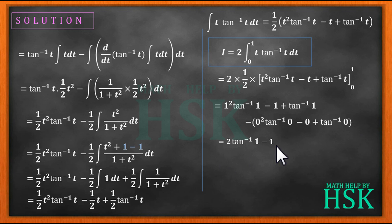Now tan inverse of 1 is pi by 4. So we have final value as 2 into pi by 4 minus 1, or pi by 2 minus 1, which is the required answer.